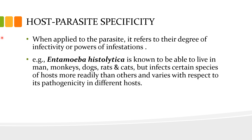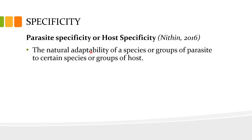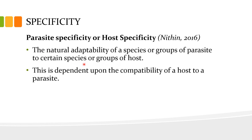For example, the protozoan parasite Entamoeba histolytica is known to be able to live in man, monkeys, dogs, rats, and cats, but it infects certain species of host more readily than others and varies with respect to its pathogenicity in different hosts. Parasite specificity, or host specificity, according to Nitin 2016, refers to the natural adaptability of a species or groups of parasites to certain species or groups of hosts, and is said to be dependent upon the compatibility of a host to a parasite.